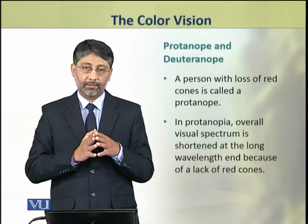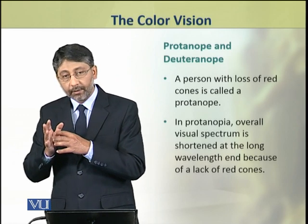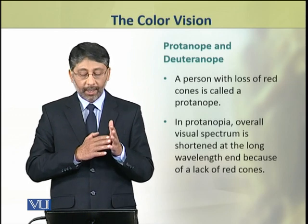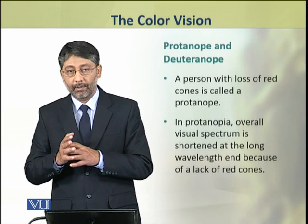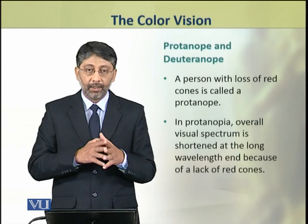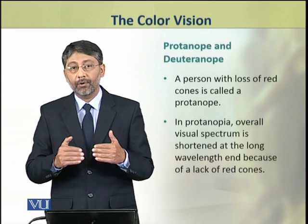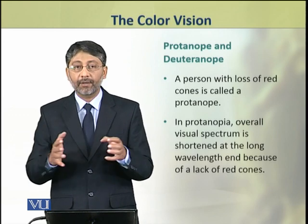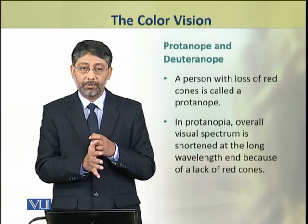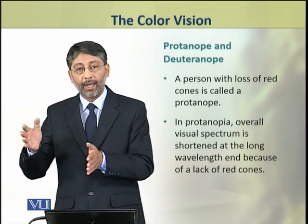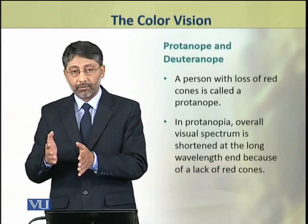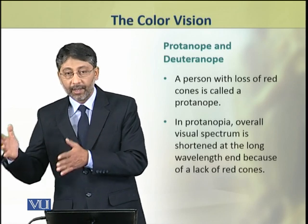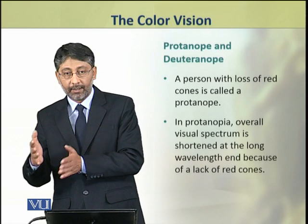A person who does not have red cones is called a protanope, and the condition is called protanopia. In protanopia, the visual spectrum is reduced and shortened, because red color has a long wavelength — in the 700 nanometer region — and the person cannot perceive those wavelengths.